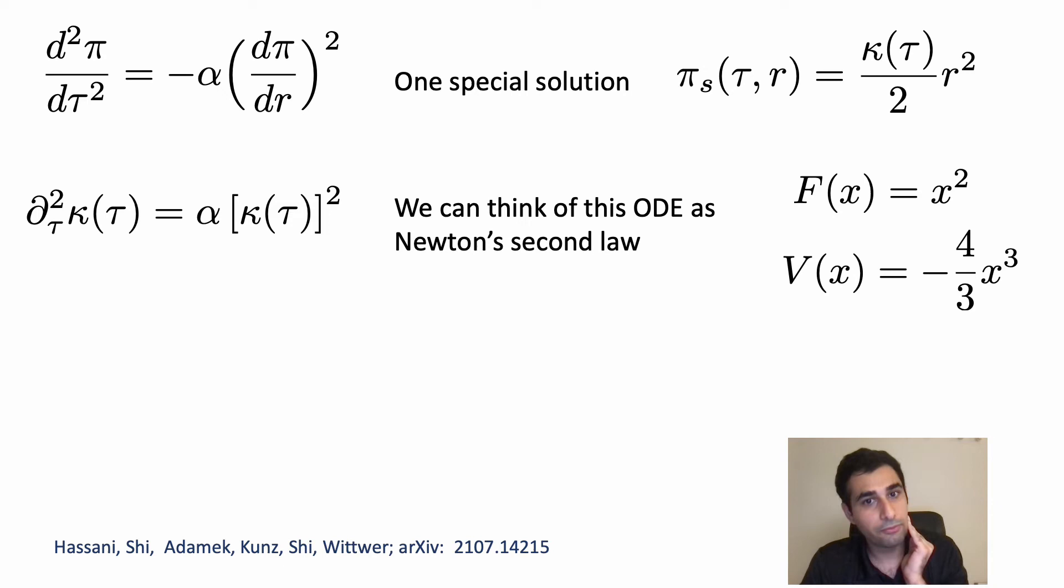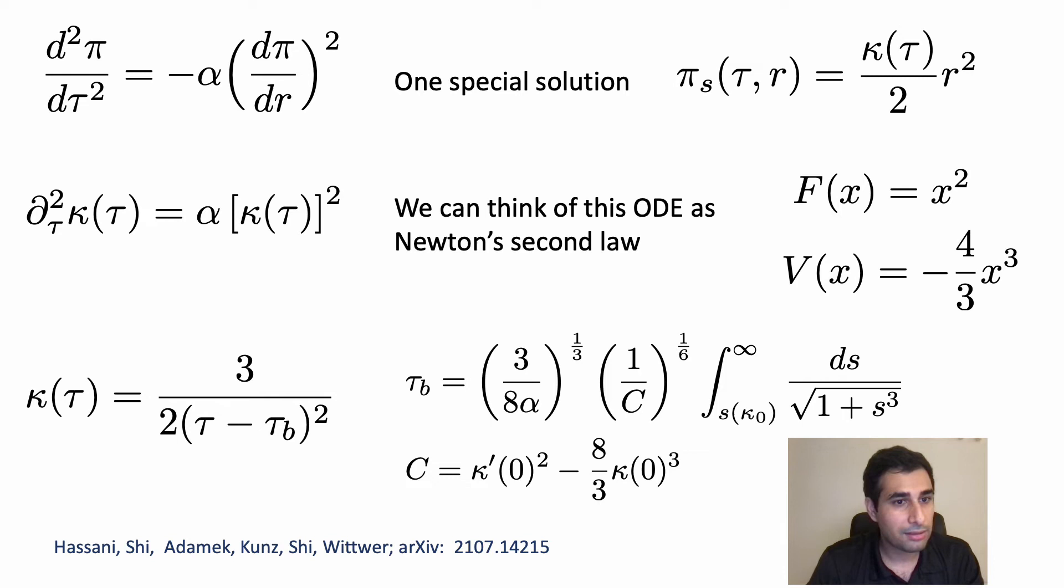corresponds to a potential of minus four thirds x³. And this potential well actually is unstable. No matter where you put the particle with whatever speed it rolls into the minus infinity in finite time.